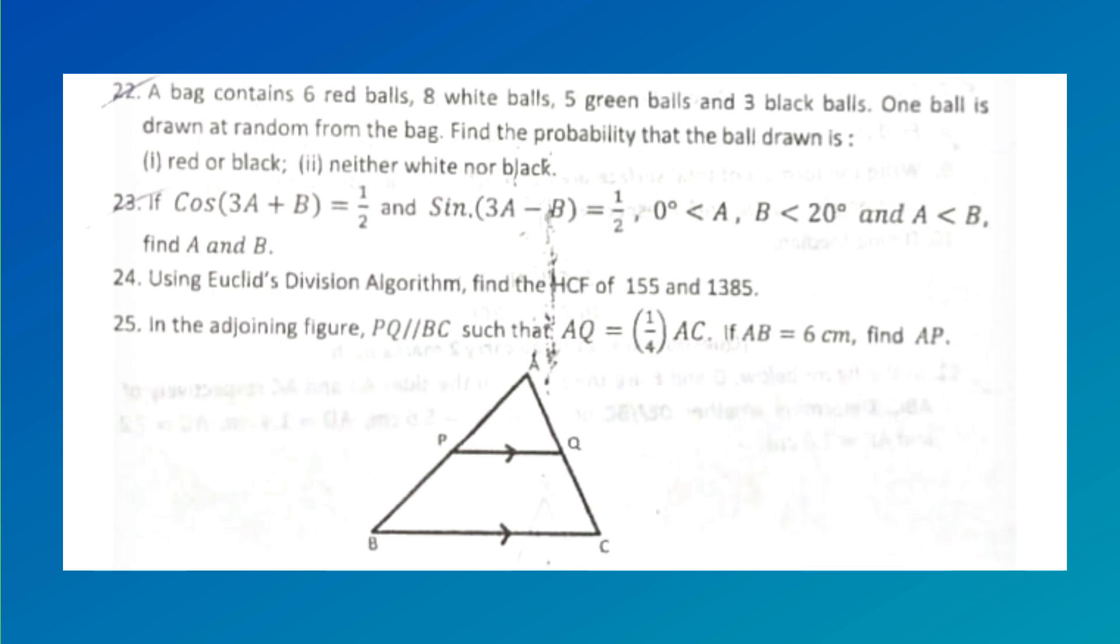If cos(3a + b) = 1/2 and sin(3a - b) = 1/2, where 0° < a < b < 90° and a < b, find a and b. Using Euclid's division algorithm, find the HCF of 155 and 1385.